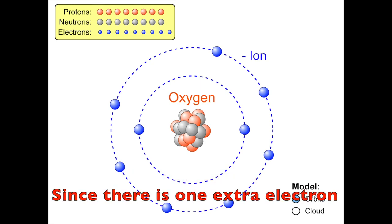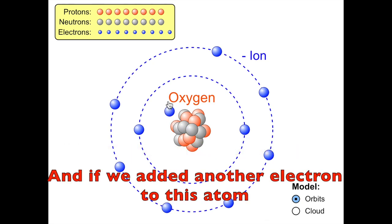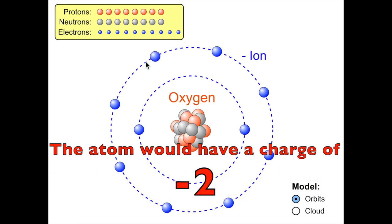Since there's one extra electron, we say this ion has a charge of minus one. And if we added another electron to this atom, the atom would have a charge of minus two. Chemists call negative ions anions.